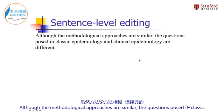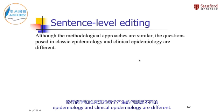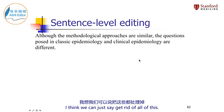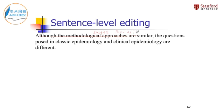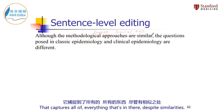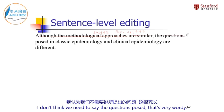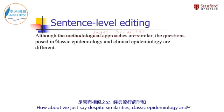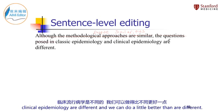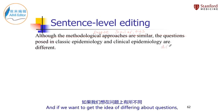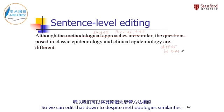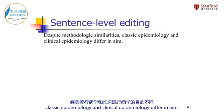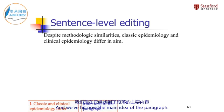Although the methodological approaches are similar, the questions posed in classic epidemiology and clinical epidemiology are different. You can hear the wordiness here, so we can get rid of some of this. How about we just say: despite similarities? That captures everything that's in there. I don't think we need to say 'the questions posed' — that's very wordy. How about: despite similarities, classic epidemiology and clinical epidemiology differ. We can do a little better than 'are different' — we can just say 'they differ.' And if we want to get that idea of differing about questions, we could say 'they differ in aim.' So we can edit that down to: despite methodologic similarities, classic epidemiology and clinical epidemiology differ in aim. And we've hit the main idea of the paragraph.